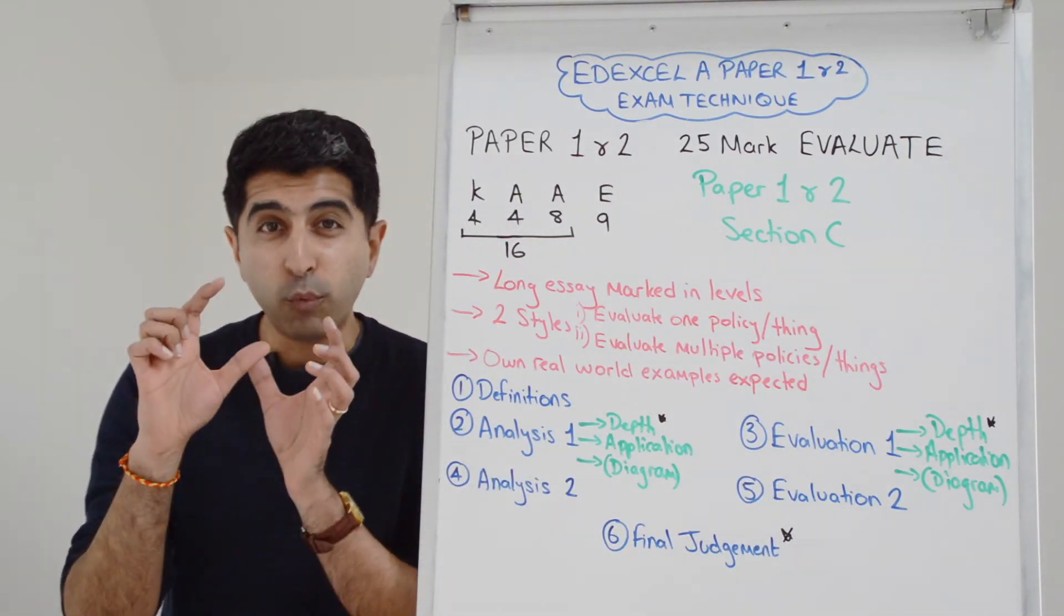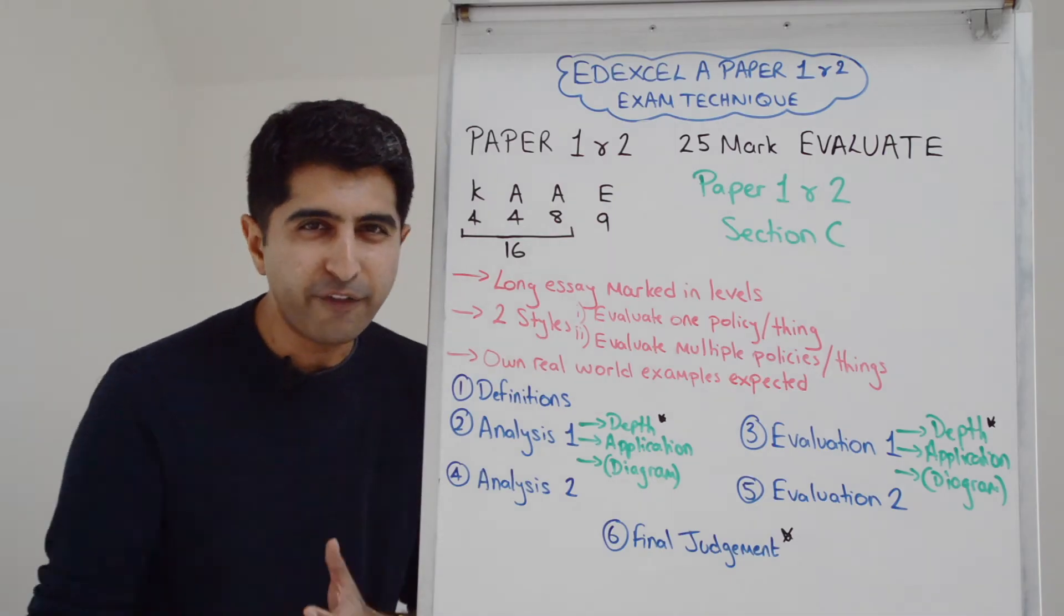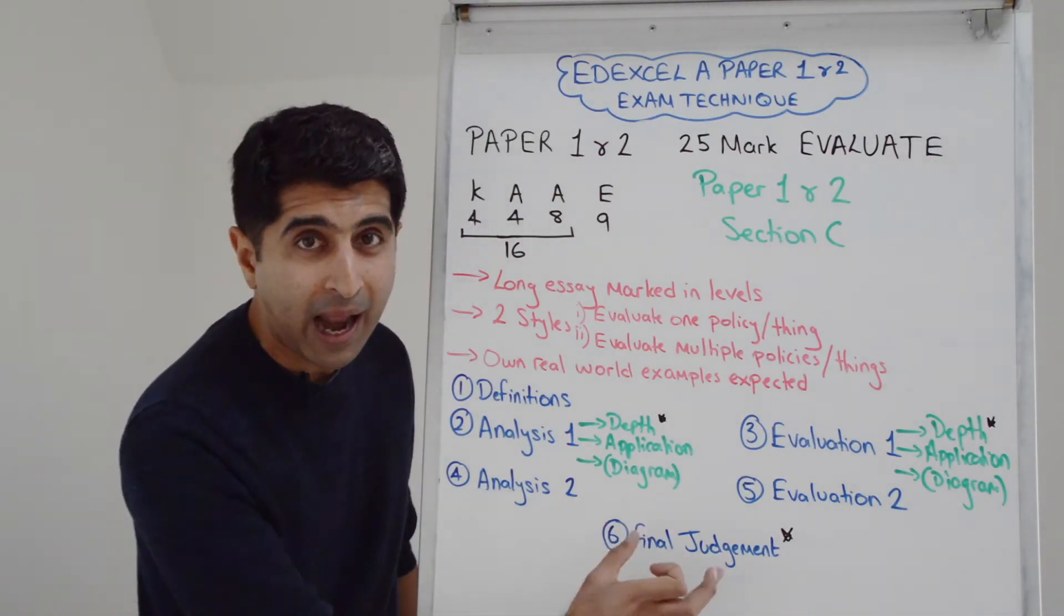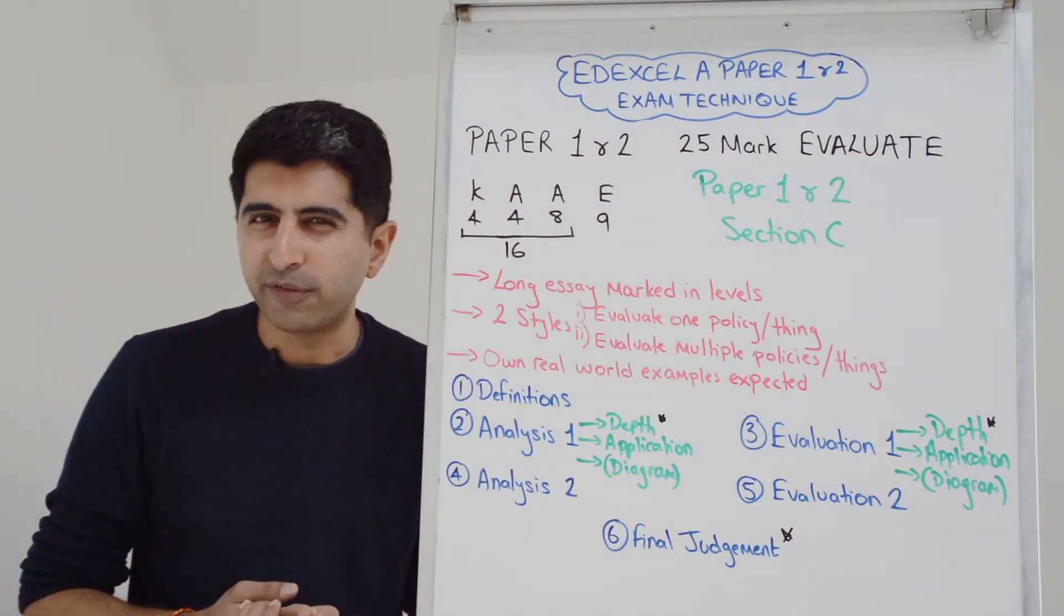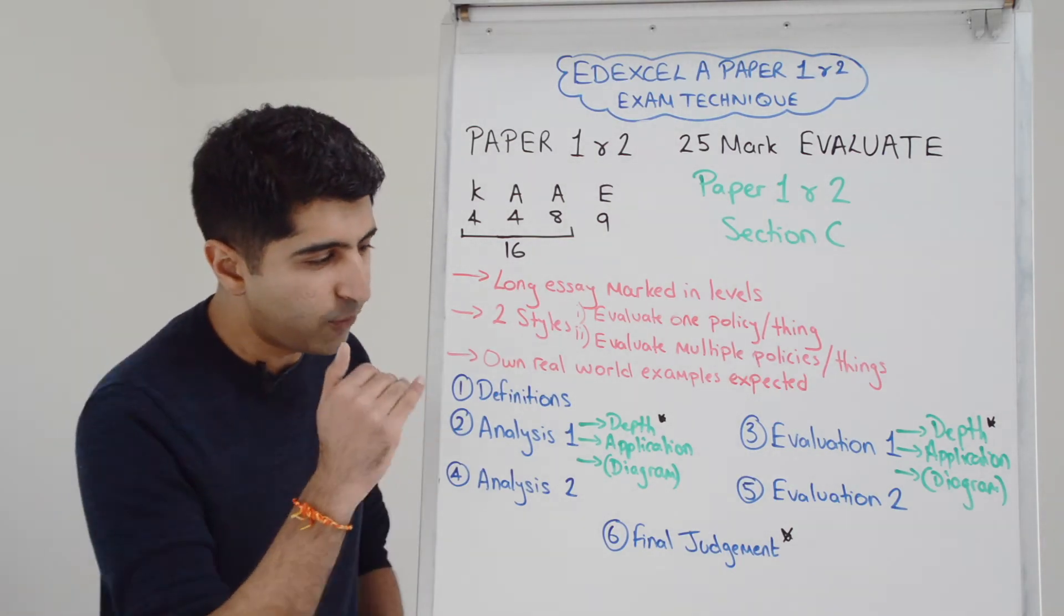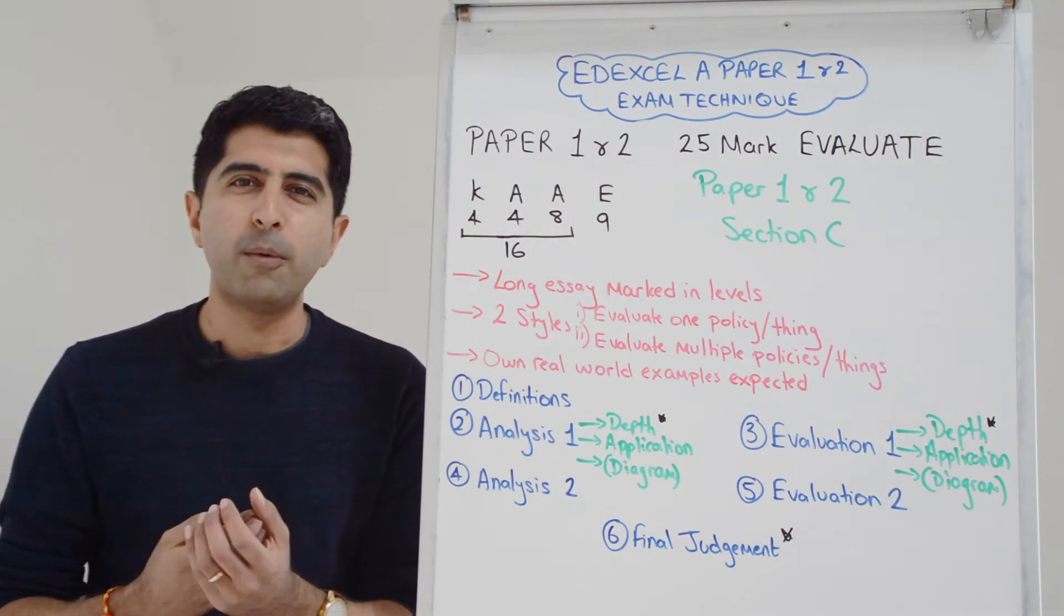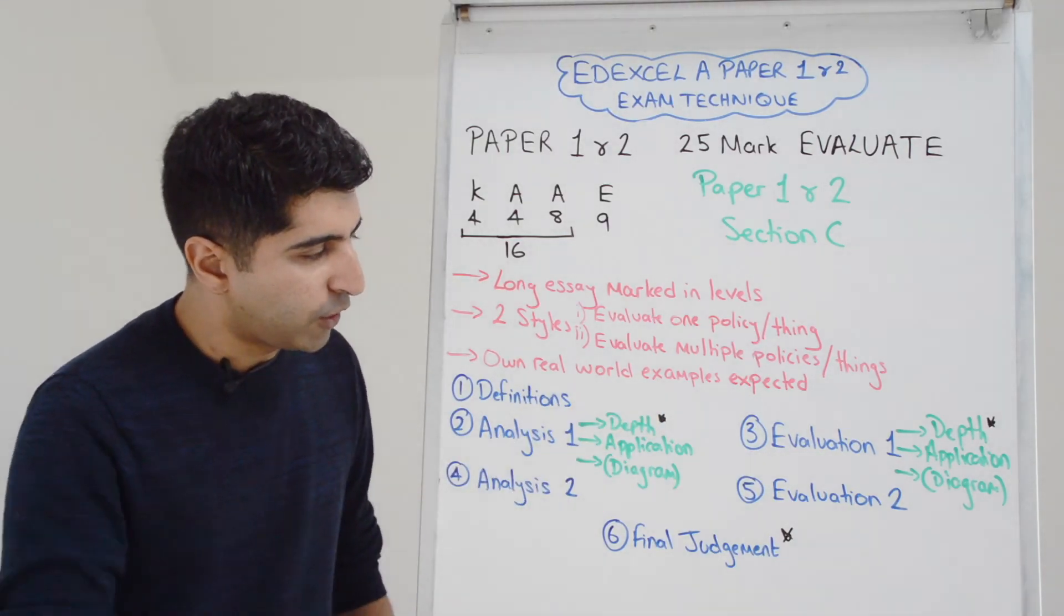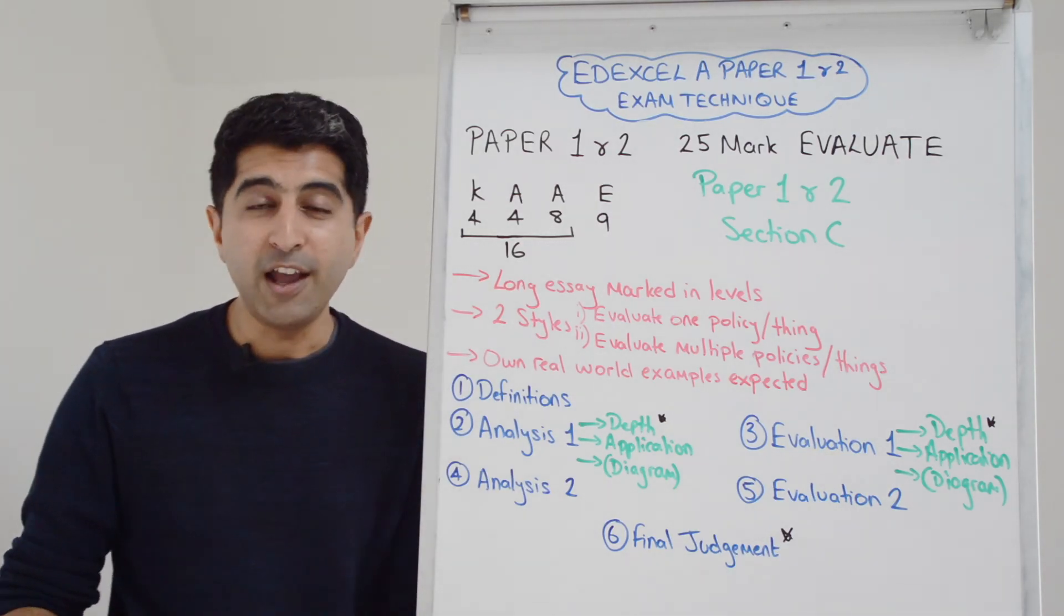Then you must finish your 25 marker with one final judgment paragraph. Examiners call this a conclusion. Most people call it a conclusion, but I like the term final judgment because that's what this paragraph is. It's your overall answer to the question. So many marks are reserved for how this paragraph goes. If the rest of the essay is done really well, this paragraph will determine whether you get full marks or you're a bit away from full marks. I have another writing skills video that covers how to write the perfect final judgment.